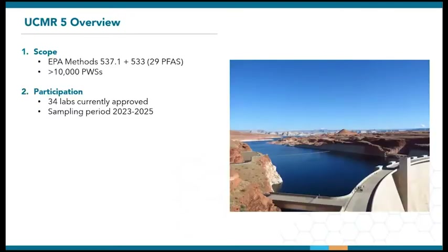UCMR5 will be using EPA Methods 537.1 and 533 to monitor 29 PFAS compounds in drinking water. By determining the occurrence of these contaminants in more than 10,000 public water systems, together with health studies, the EPA can then make informed decisions on regulation. Extensive testing calls for the participation of numerous labs. As of June, there are 34 labs approved for PFAS testing under UCMR5. The sampling period will take place between 2023 and 2025, and data reporting is due to complete in 2026.